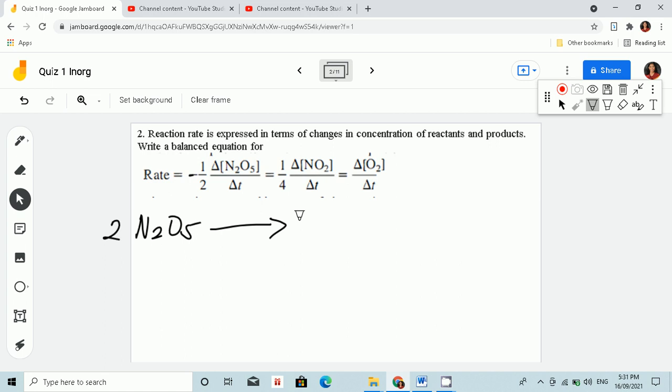It's one-fourth, so four nitrogen dioxide, plus since no fraction, so it's one, we will not write it anymore. So we have oxygen.